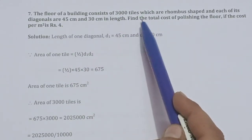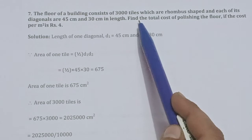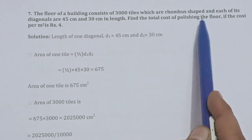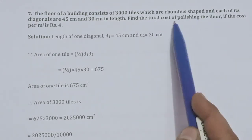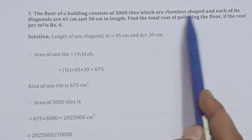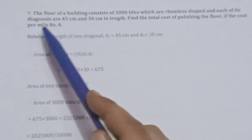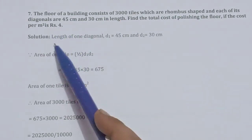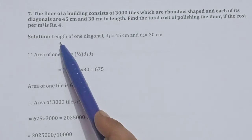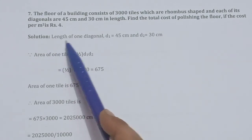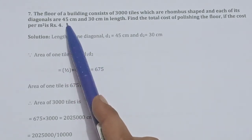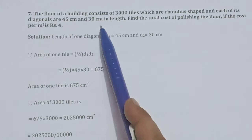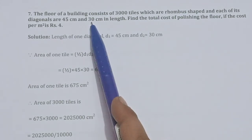We need to find the total cost of polishing the floor. The cost is given per square meter, which is Rs. 4. The diagonals given are D1 = 45 cm and D2 = 30 cm.